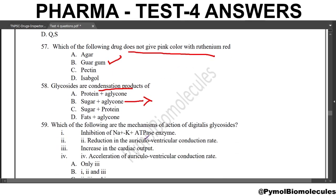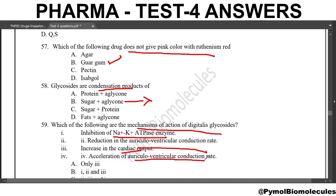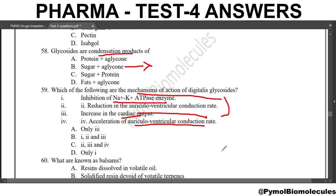Next question: which of the following are the mechanisms of action of digitalis glycosides? The options include inhibition of sodium-potassium ATPase, it reduces the atrioventricular conduction rate, it increases cardiac output, and it accelerates the AV conduction rate. Options 1, 2, and 3 are correct. It does not accelerate but rather reduces the AV conduction rate.